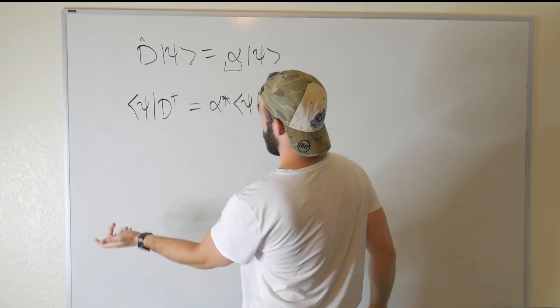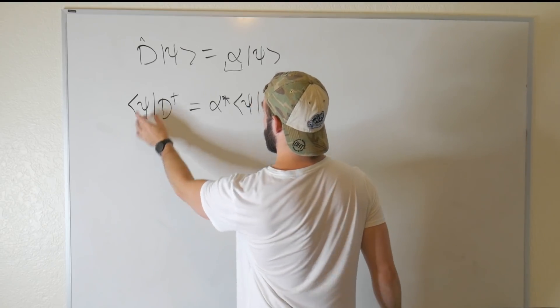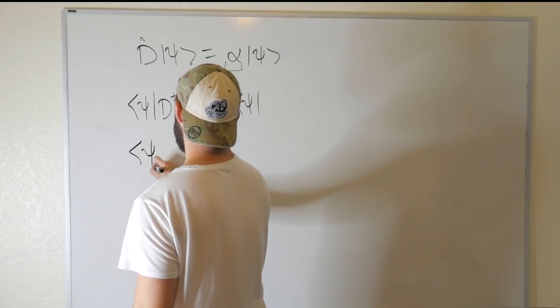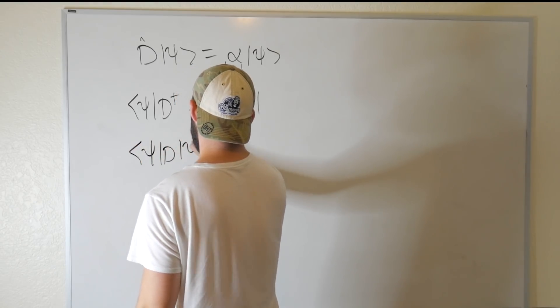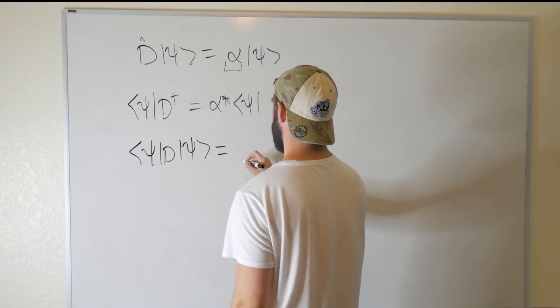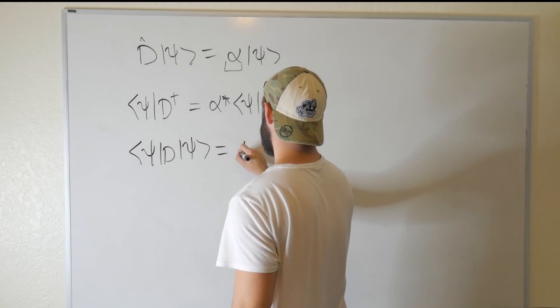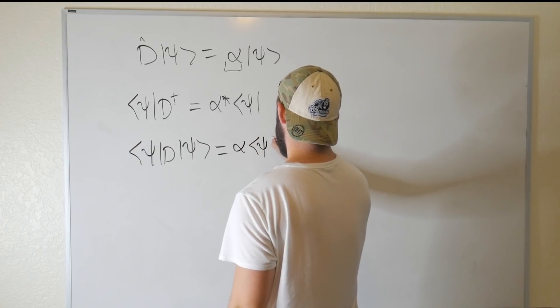Now let's go ahead and take the inner product of some bra psi to this. So we get ⟨ψ|D|ψ⟩ is equal to, well, we know what this is. This is just alpha times our state. So this is just α⟨ψ|ψ⟩.